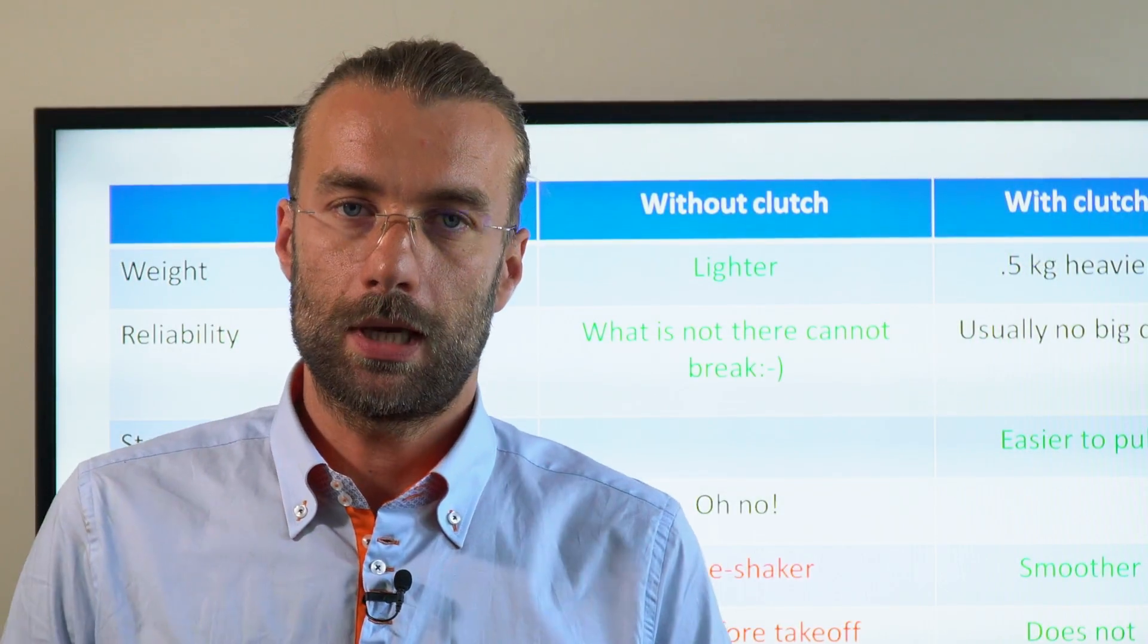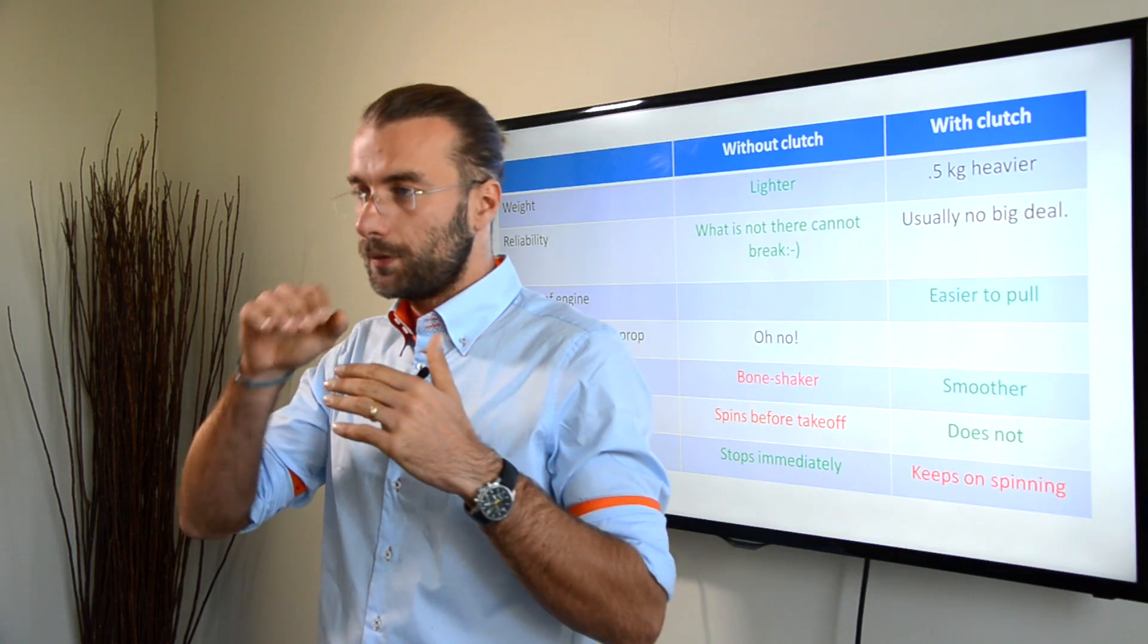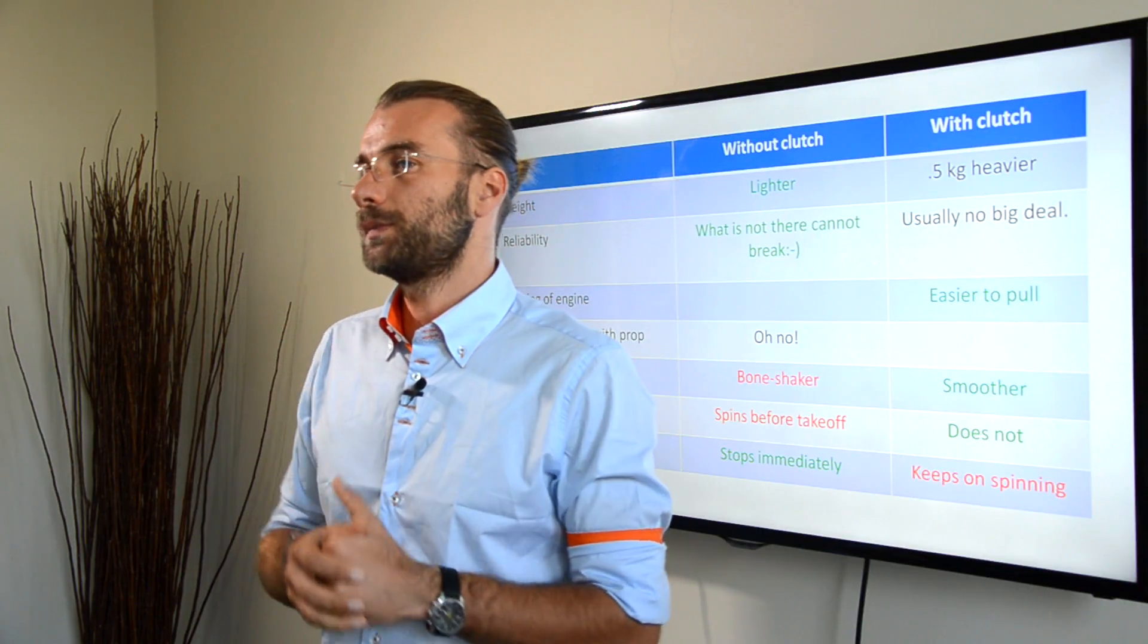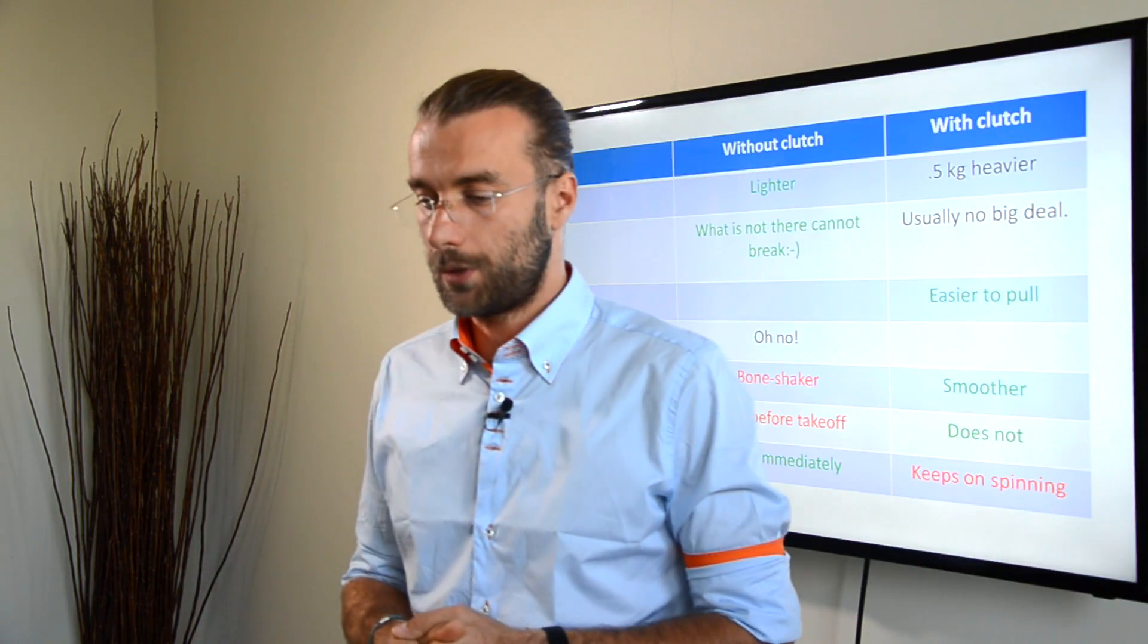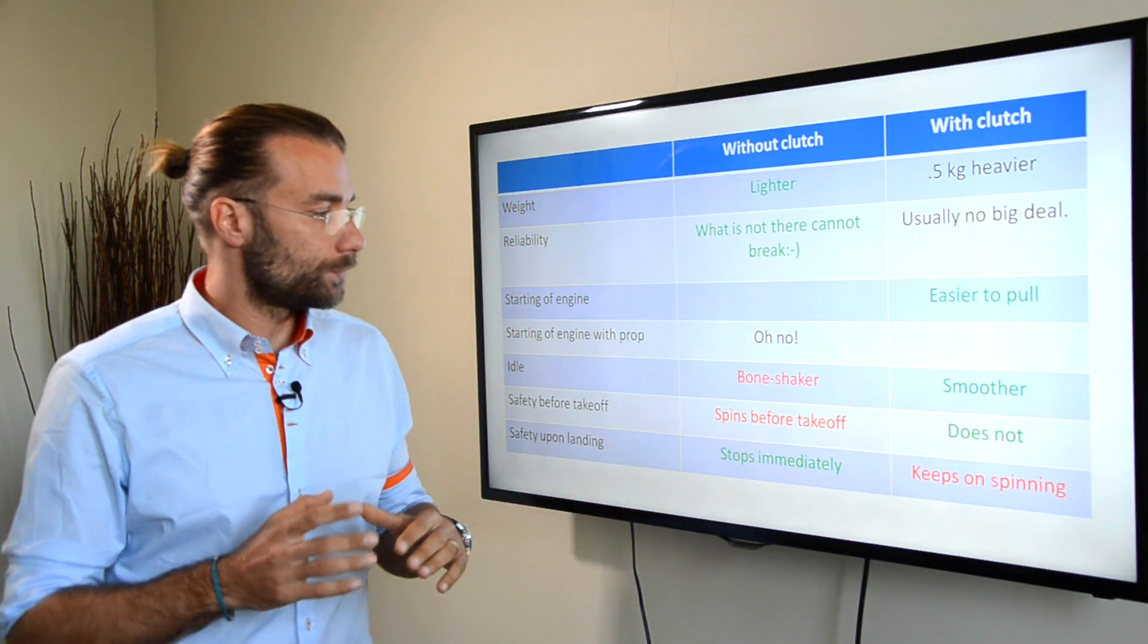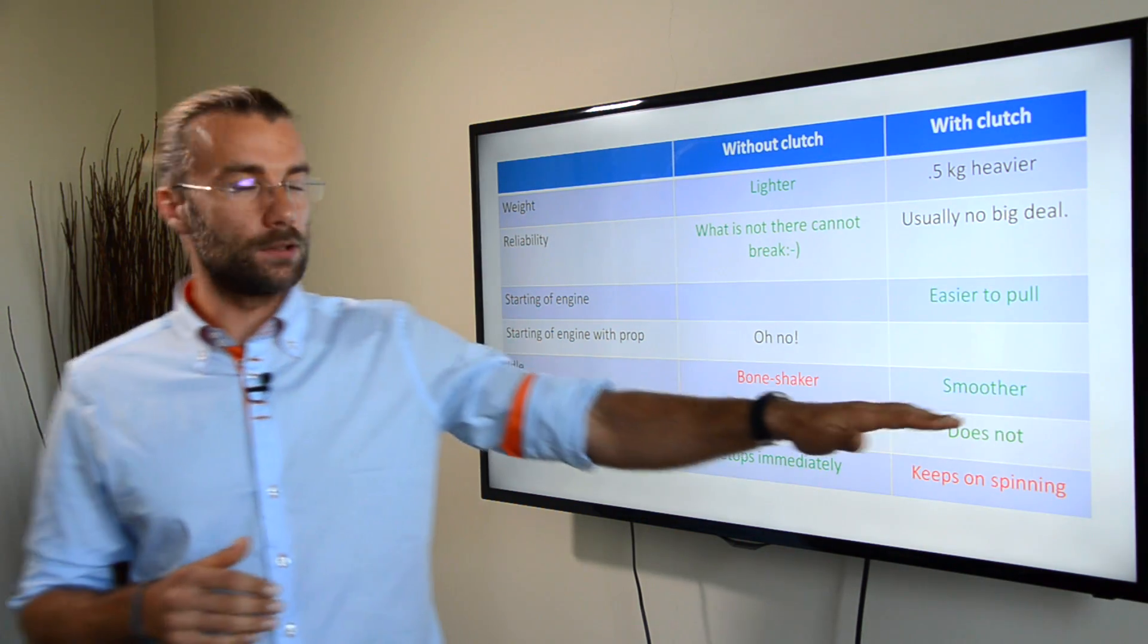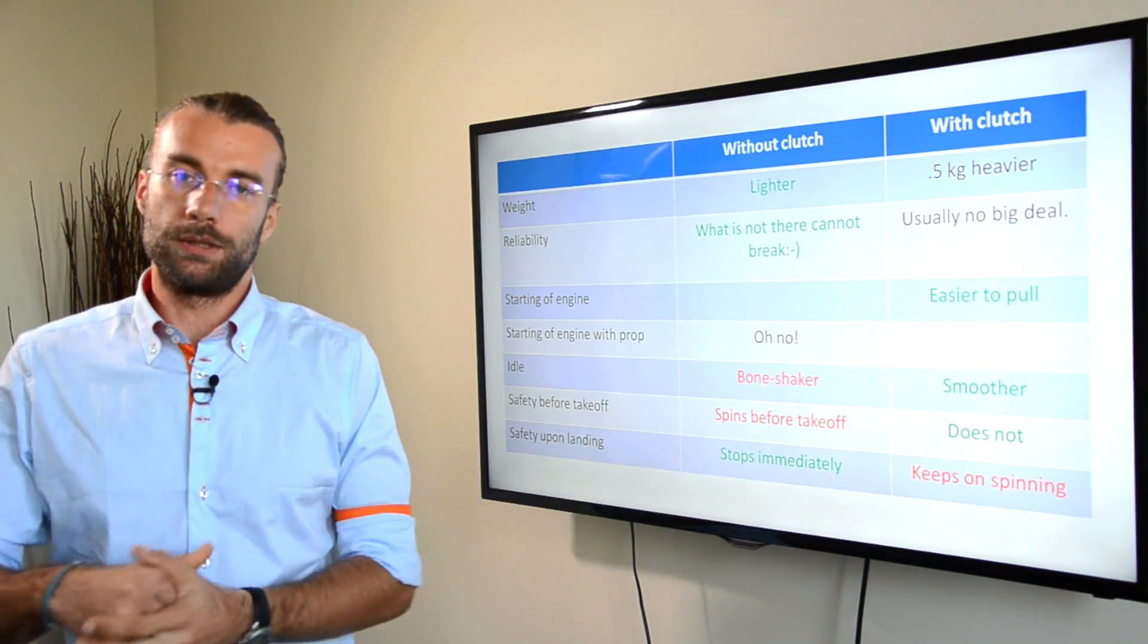The clutched engines have a slight disadvantage. That is, right before landing, or after landing, when you kill the engine, the prop keeps on spinning. So, there's a higher risk of your lines getting tangled into the prop. So, this is sort of tricky to choose, either the benefit for takeoff and the disadvantage on landing, or the other way.